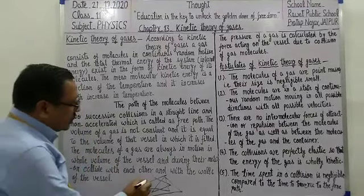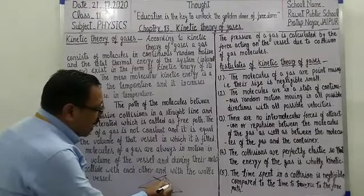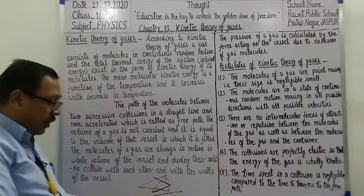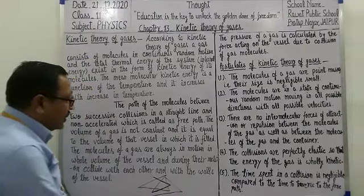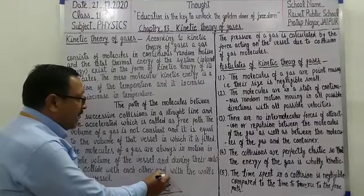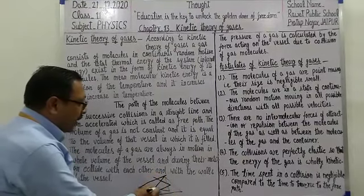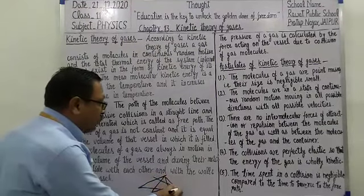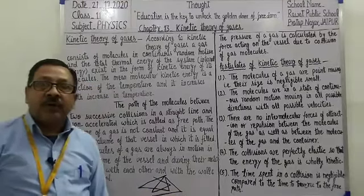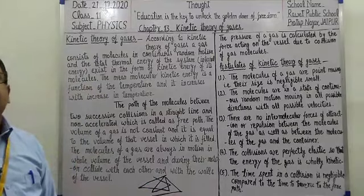جیسے suppose کریں کہ gas کا کوئی molecule straight path میں move کیا، after collision اس کی direction اور velocity کا magnitude change ہو گیا۔ اس کے بعد پھر collision ہوئی تو وہ دوسری direction میں اور الگ velocity کے magnitude سے move کر رہا ہے۔ یعنی each collision کے بعد velocity کی direction اور magnitude دونوں variable ہیں۔